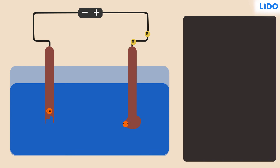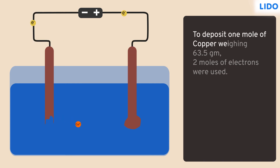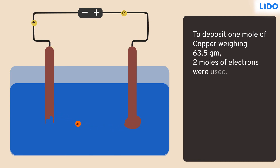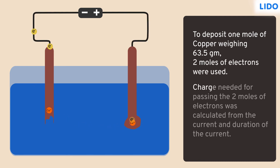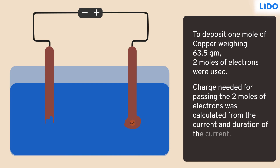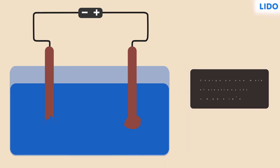'For every two electrons, one copper atom was deposited on the rod. Simply speaking, one mole of copper weighing 63.5 grams was deposited on the rod. Two moles of electrons were used for it, and the charge needed for passing the two moles of electrons was calculated from the current and duration of the current. Doing simple calculations, Faraday found the charge on one mole of electrons.'